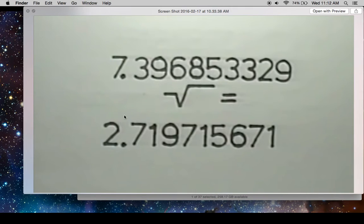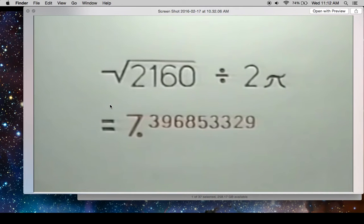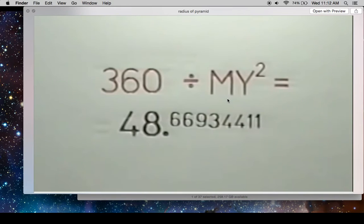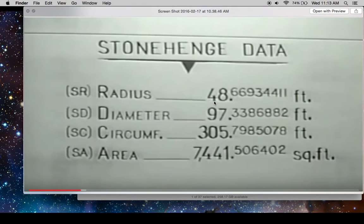So these ancients are using feet, they're using yards, they're using all this modern stuff that we think some white guy just put in there because he was bored. No. There's a standard for everything. Now let's do 360 divided by the square of the megalithic yard, 48.6693. What is that? It's actually the radius of the pyramid, the Great Pyramid, in feet. I mean, it's all connected.